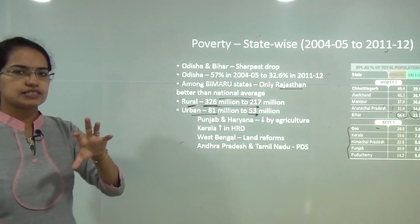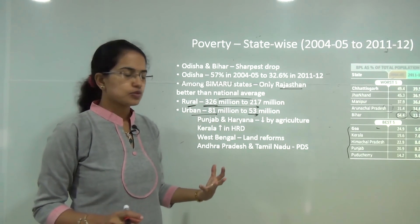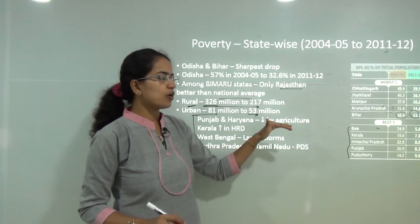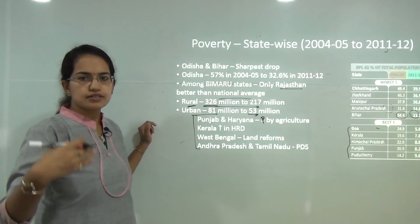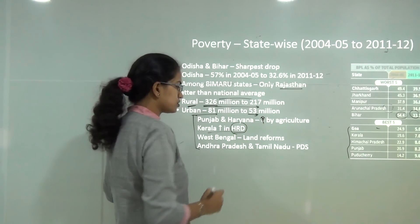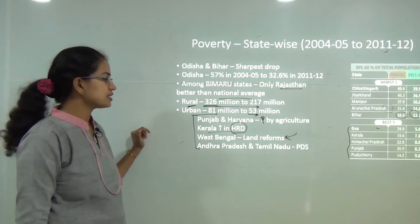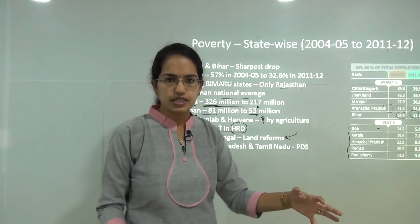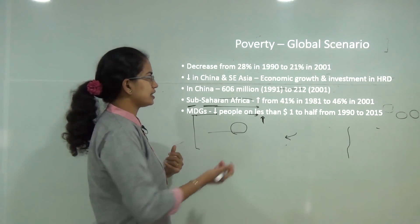Different factors in different states have led to better living standards. In Punjab and Haryana it was better agriculture and employment. In Kerala it was due to human resource development. In West Bengal it was mainly due to land reforms. In Andhra Pradesh and Tamil Nadu it was mainly due to the public distribution system — the availability of basic amenities to each individual.